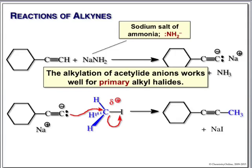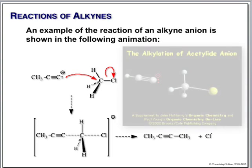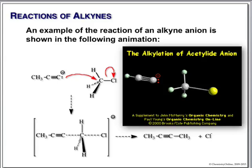You can only do this with terminal alkynes, and it works best for primary or methyl alkyl halides. The reaction is just a simple SN2: take our anion, attack the electrophilic carbon, halogen is the leaving group, it's concerted with inversion at the central atom, and we wind up with our alkylated alkyne.